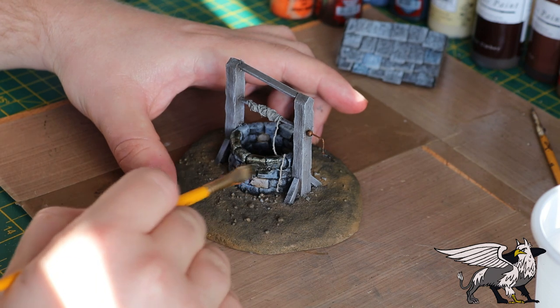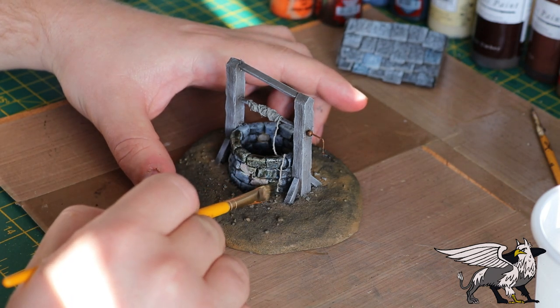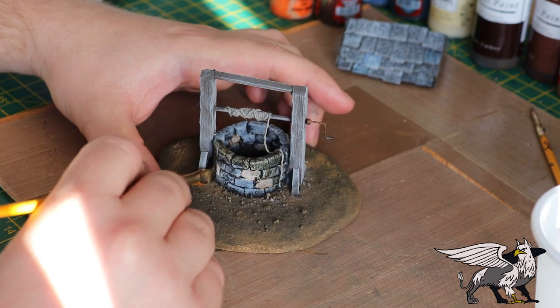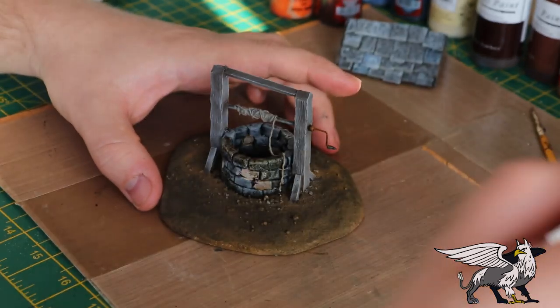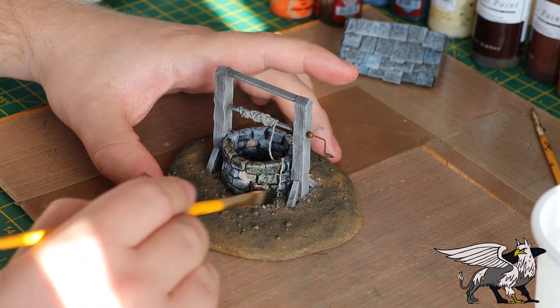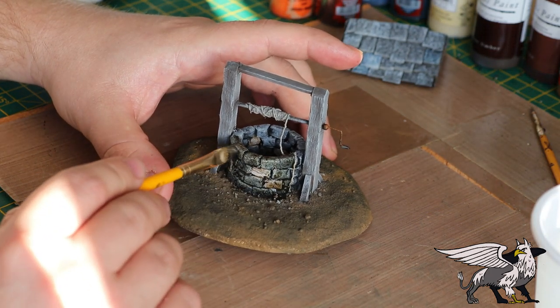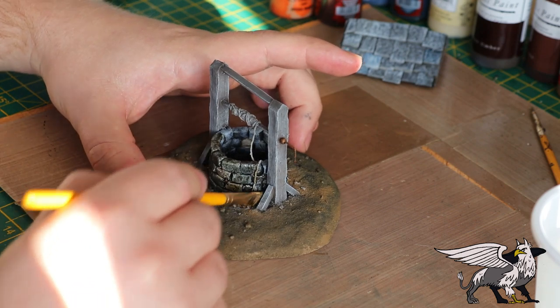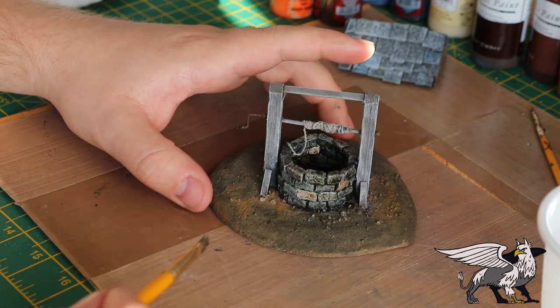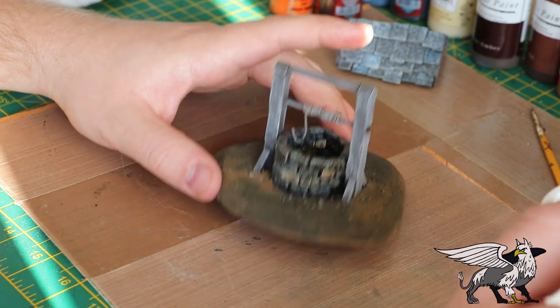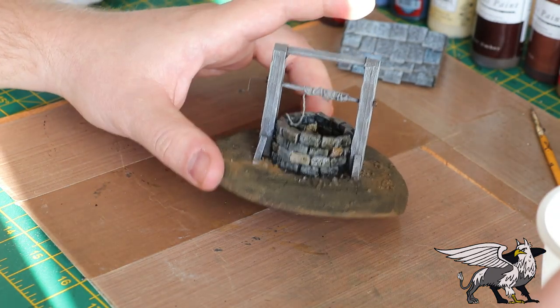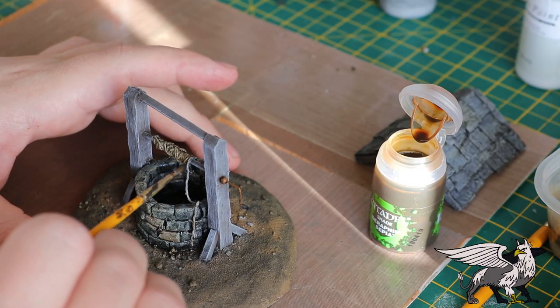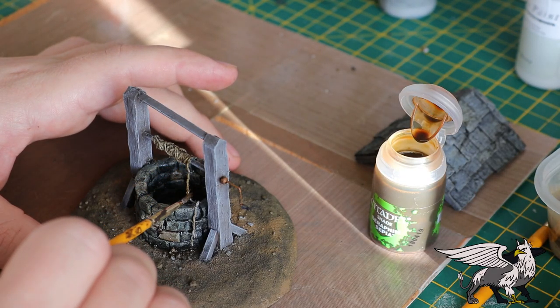Then I added wash to the stonework. I didn't want to put this wash on the wood because it would darken down too much, so I actually used a different wash for the wood. Put the stonework on the inside of the well as well, just to really darken it down and give it a much grimer, authentic stone feel. Then I added some Agrax Earthshade to the rope to really pick out the texture.